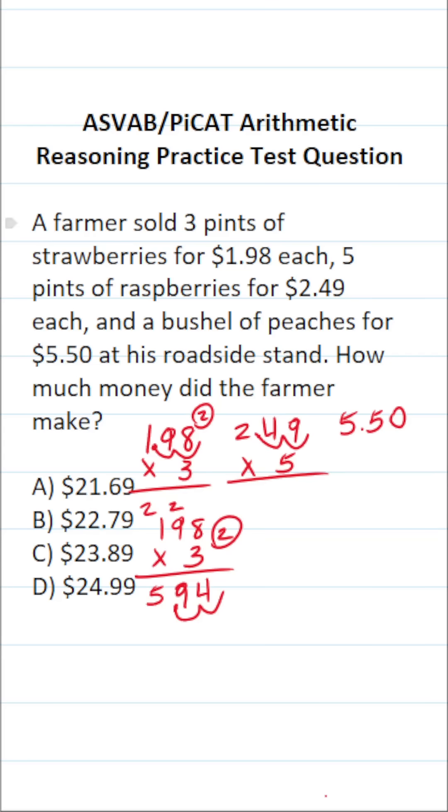Same thing here, we've got to move this decimal in $2.49 two times to the right. This becomes 249 times five, with two decimals to move back into our answer. Nine times five is 45, bring down a five, carry a four. Four times five is 20, plus four is 24, bring down a four, carry a two. Two times five is 10, plus two is 12. Bring in our two decimals. We can see that he made $12.45 selling his raspberries.